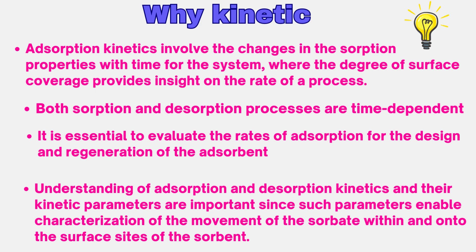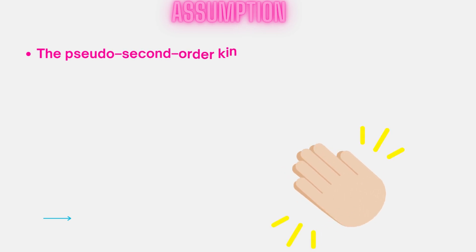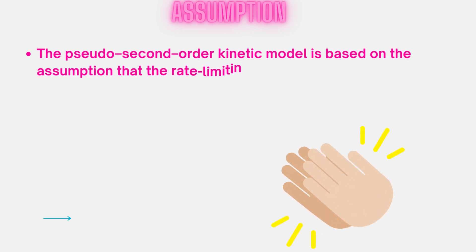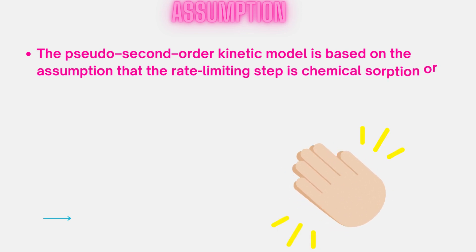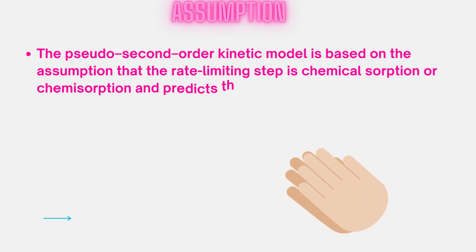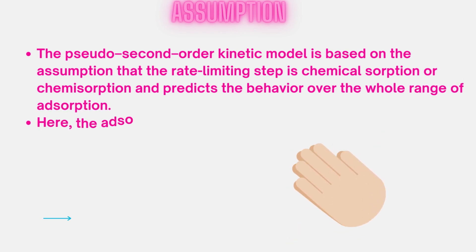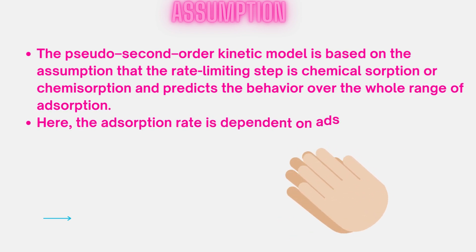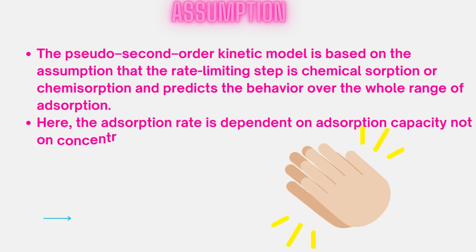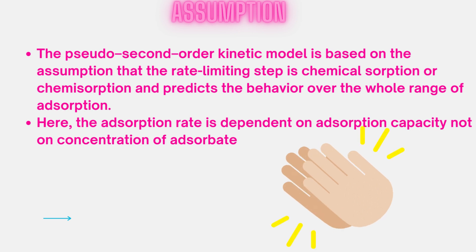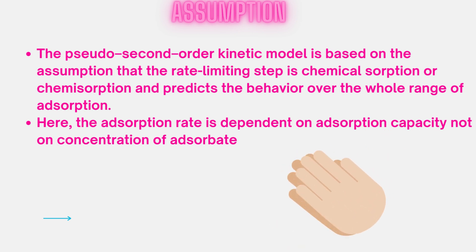Now we come to the pseudo-second order reaction. This model is primarily based on the assumption that the rate limiting step is chemical adsorption, or chemisorption, and predicts the behavior over the whole range of adsorption. Here, the adsorption rate is dependent on adsorption capacity, not on the concentration of the adsorbate.